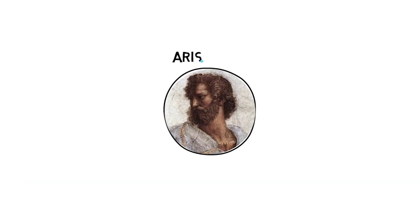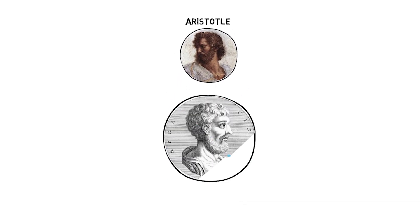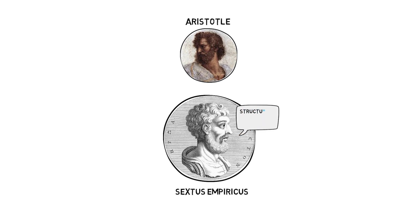The epistemic regress problem is a very old problem in epistemology. We find reference to this issue as early as the writings of Aristotle, and while it's sometimes used as a way of arguing in support of skepticism — for instance, we find this sort of move in the works of Sextus Empiricus — the most important role of the regress problem is its function in helping us get clear about the structure of epistemic justification.